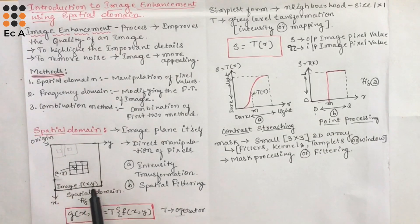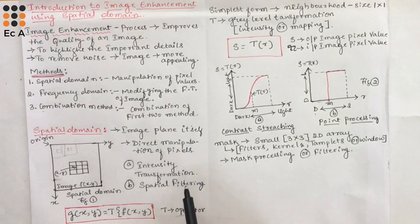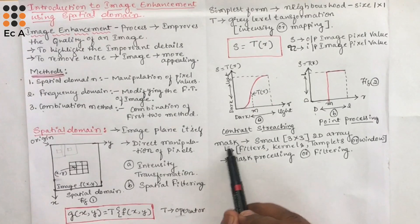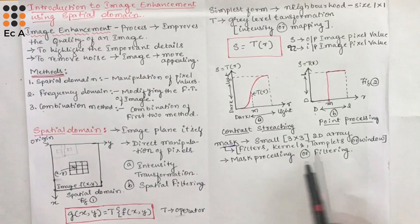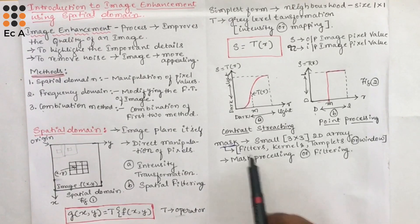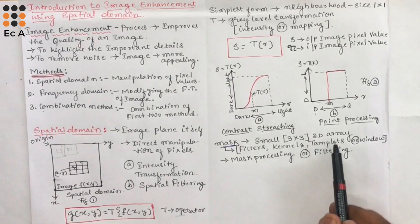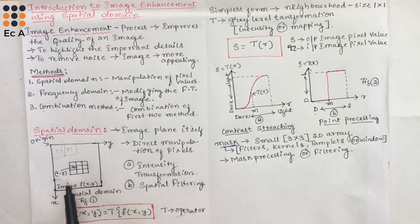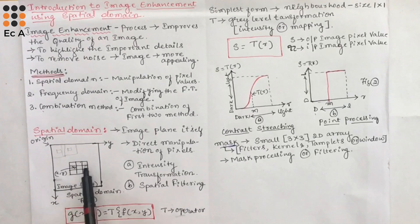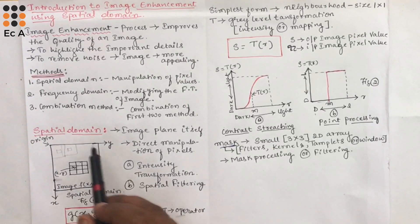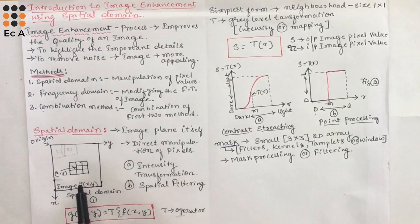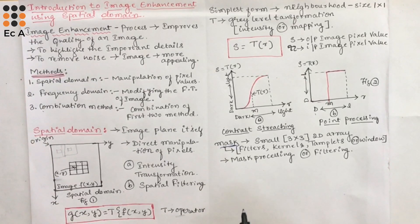If you consider the image, a large number of neighborhoods will result in more flexibility. One principal approach is to use a mask, also known as a filter, kernel, template, or window. Basically, a mask is a small 2D array of the order 3×3, as shown in this figure. The value of mask coefficients will determine the nature of the process that can be applied onto the image. This type of processing is known as mask processing or filtering. An example of mask processing is image sharpening.